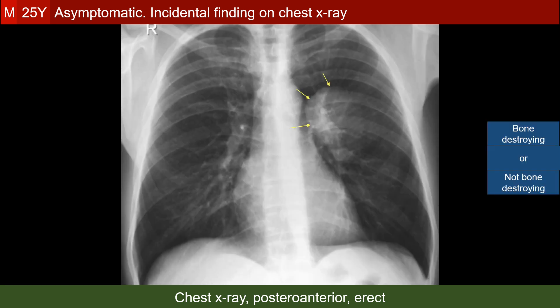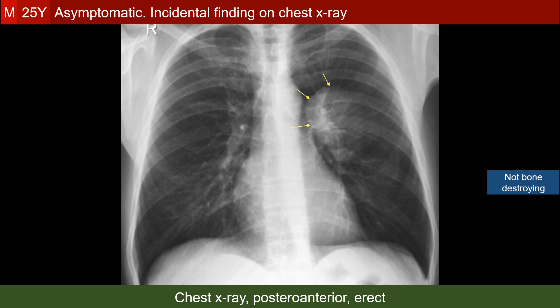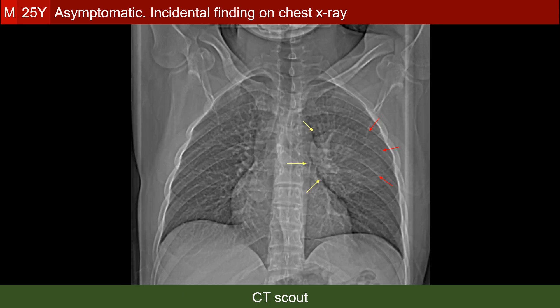The last question is whether the lesion is destroying the bone. The answer is no, in view of the preserved integrity of the ribs adjacent to the lesion. Therefore, we know before doing the CT that we are dealing with a solid anterior pleural-based lesion related to the left second, third, and fourth ribs, without bone destruction — probably a solitary fibrous tumor of the pleura.